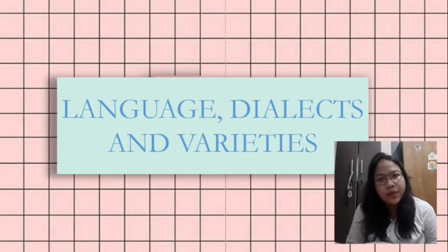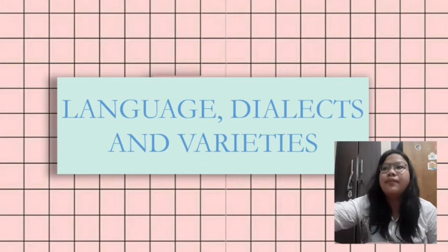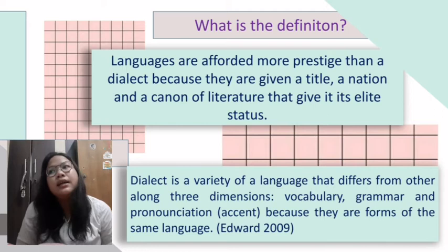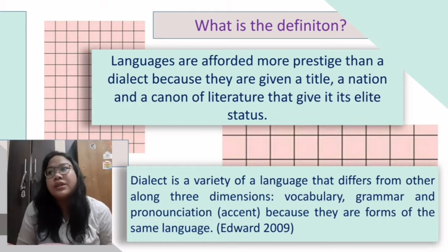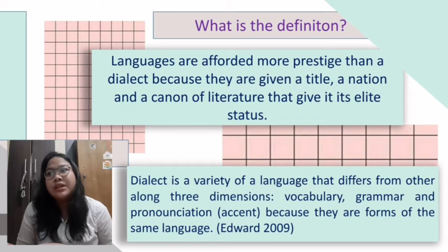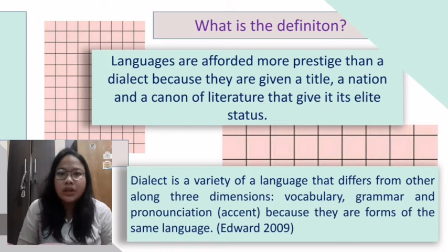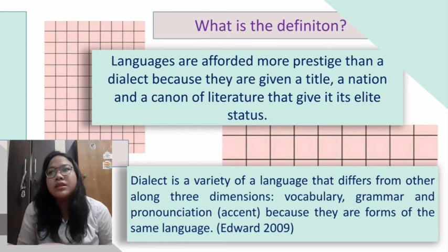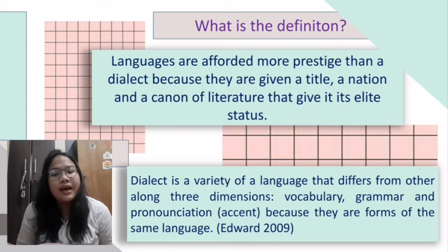So we start from the definition between language and dialects. Language is afforded more prestige than a dialect because it is given a title, a nation, and a canon of literature that gives it its elite status. While dialect is a variety of language that differs from others along three dimensions: vocabulary, grammar, and pronunciation — or we can say accent — because they are forms of the same language, based on Aithword 2009.